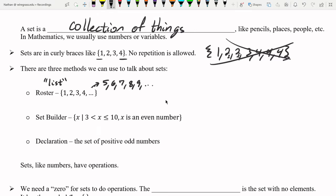The set builder notation gives you instructions on how to do it. So this is read as x such that x is between 3 and 10. It can equal 10 but not equal 3. And x is an even number.